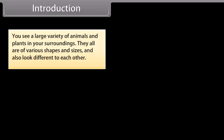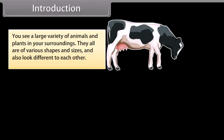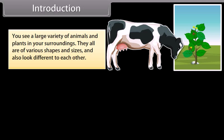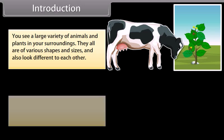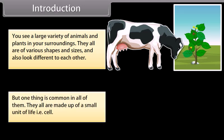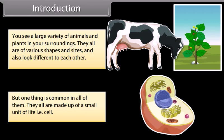Introduction: You see a large variety of animals and plants in your surroundings. They all are of various shapes and sizes and also look different from each other. But one thing is common in all of them — they all are made up of a small unit of life, that is, the cell. In this module we are going to learn about cell and its structure.